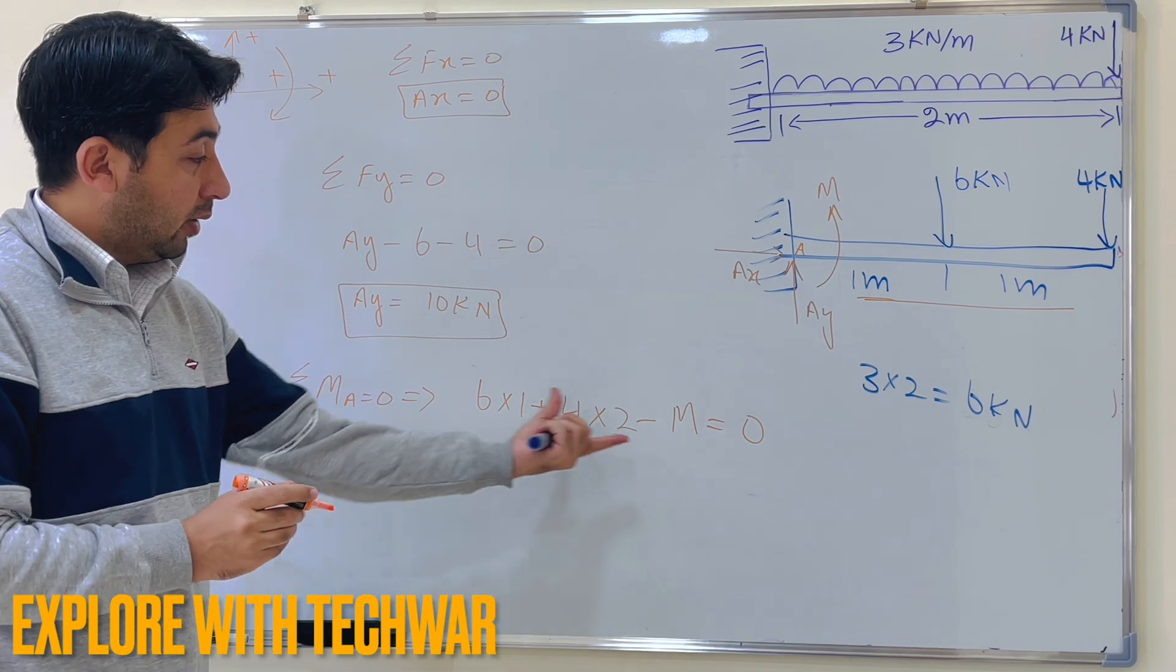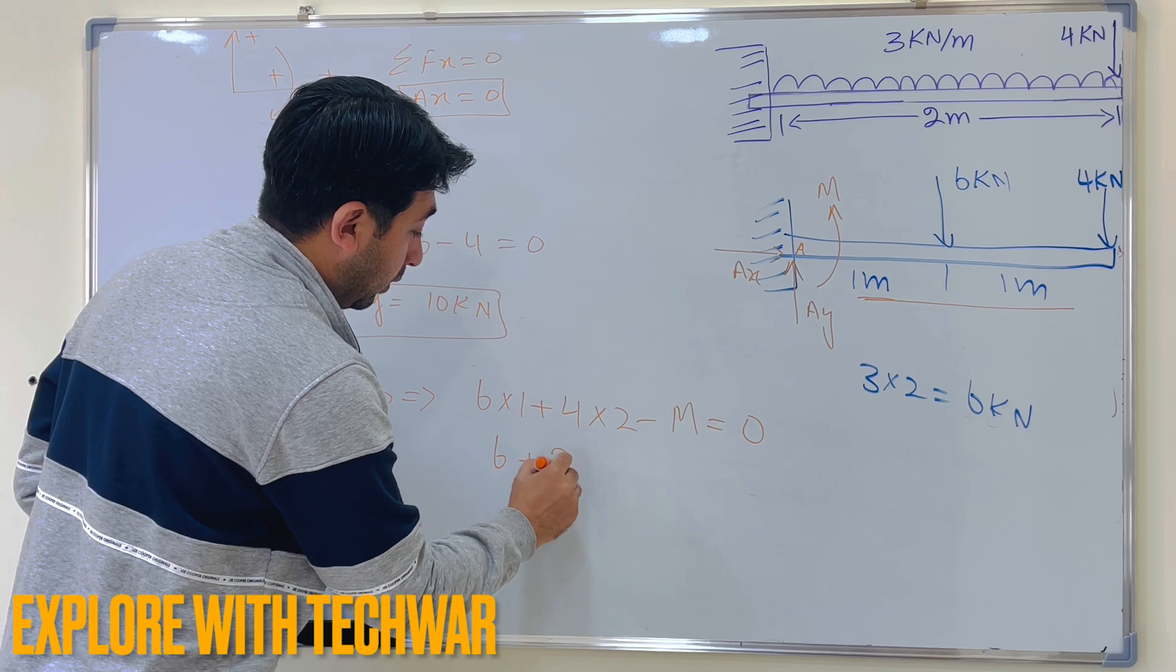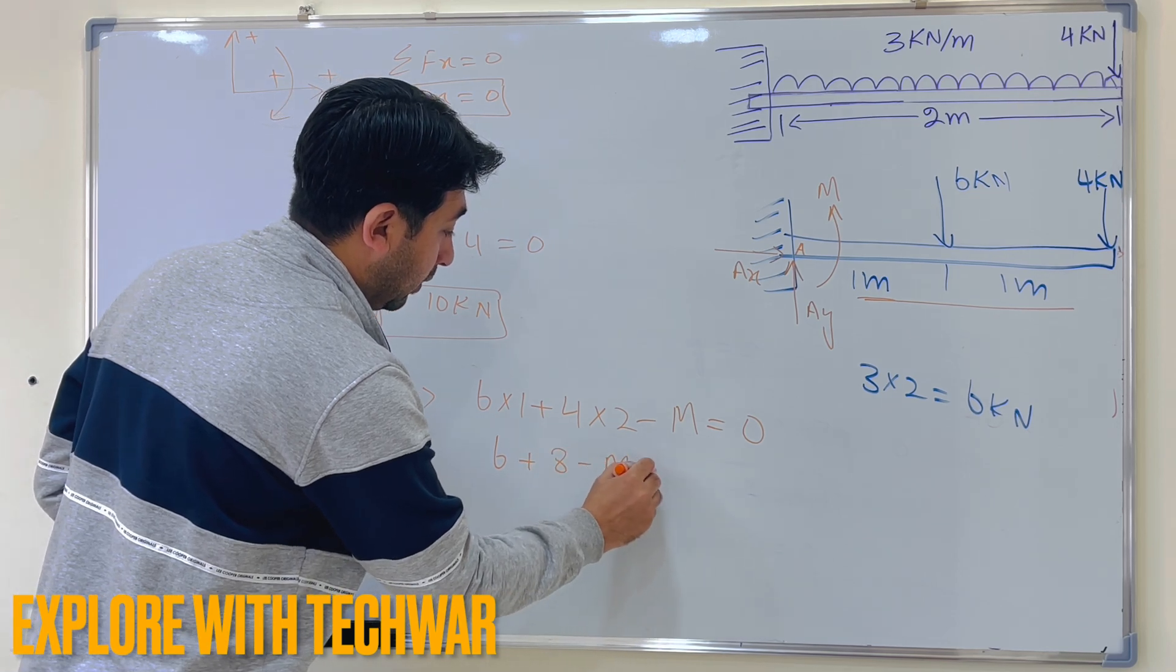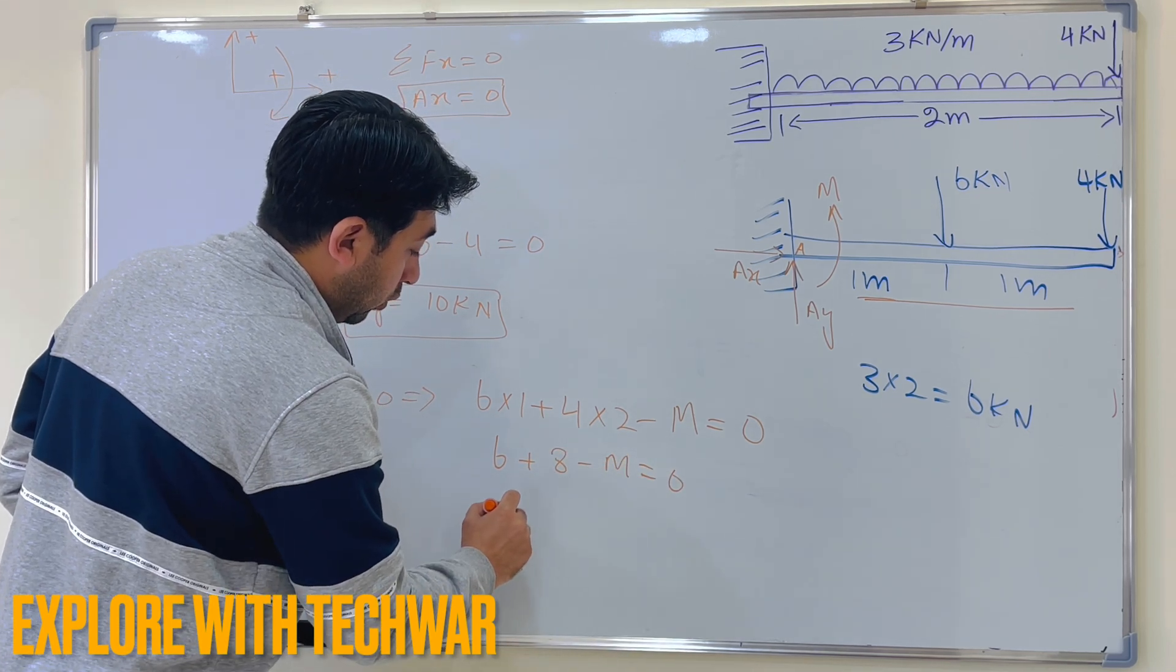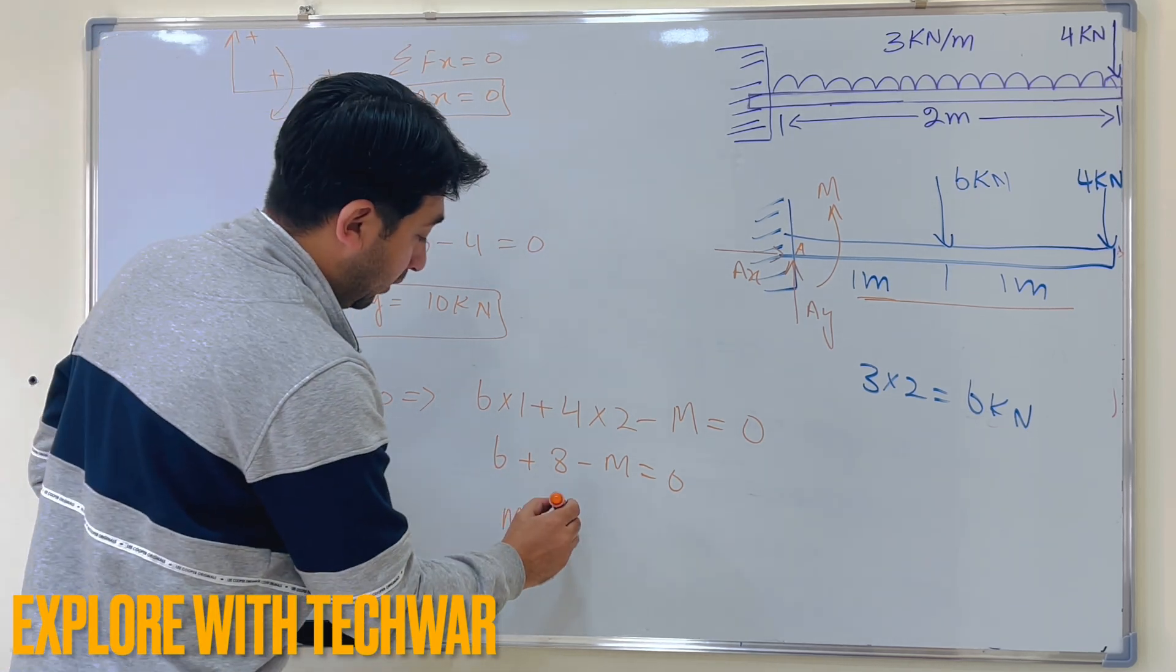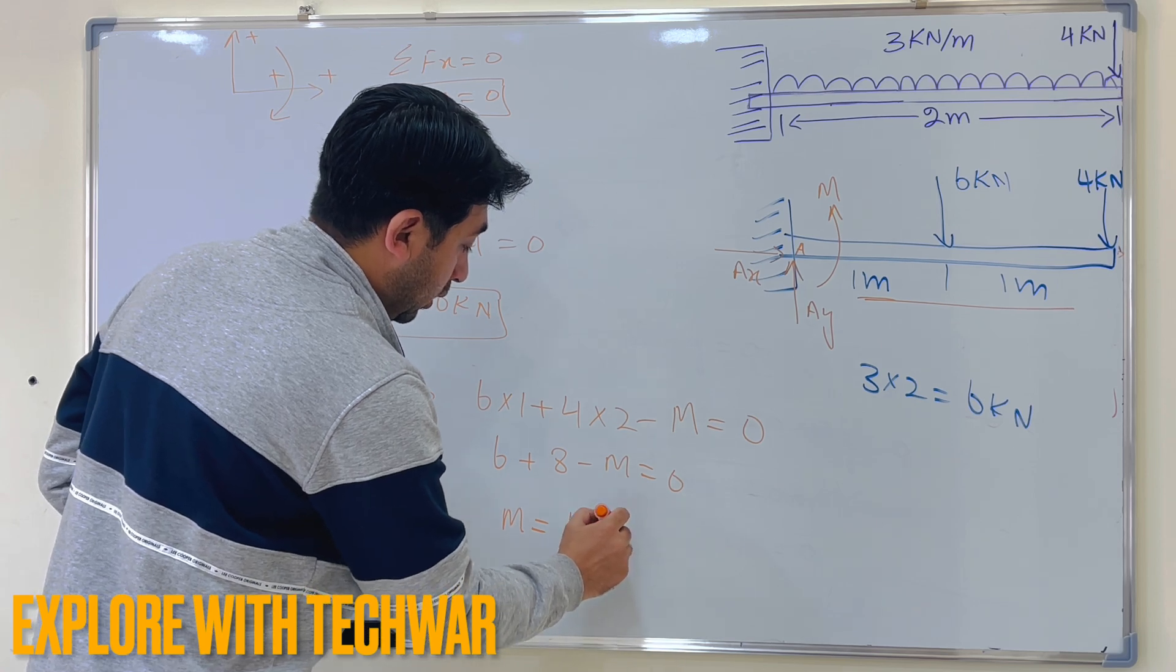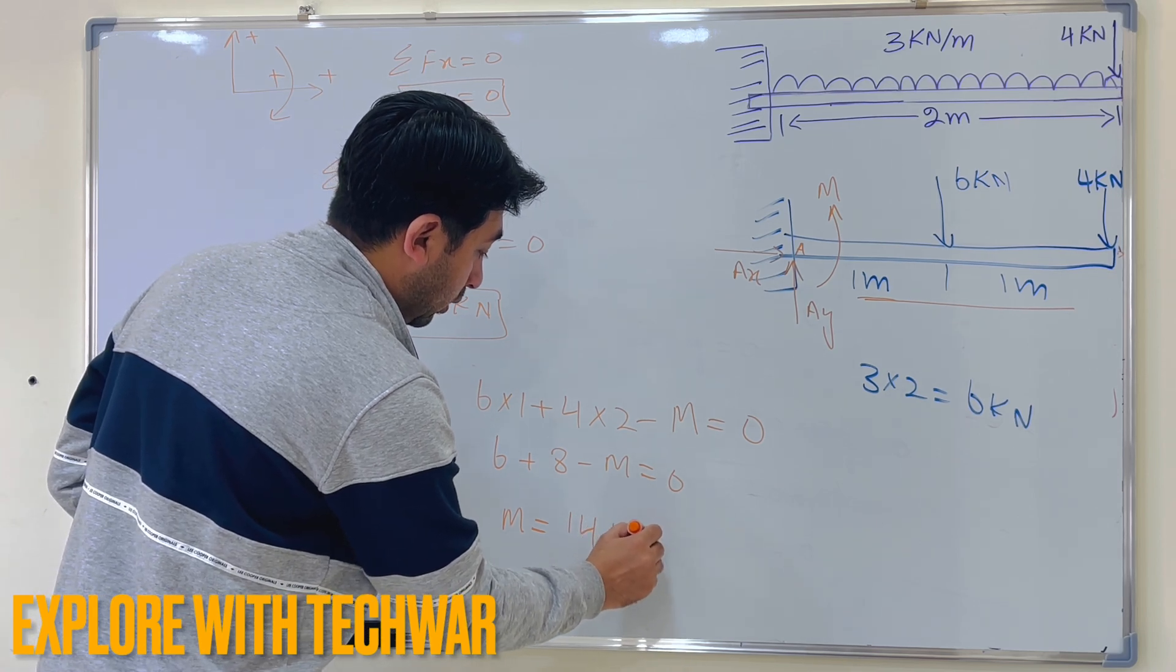So now I have to solve this for M, so it will be 6 plus 8 minus M equals 0, so M is equal to 6 plus 8, 14 kN·m.